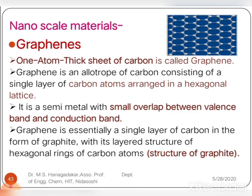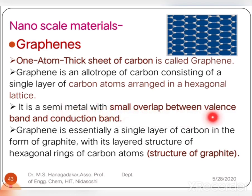The last nanoscale material is graphene. Graphene is one atom thick sheet of carbon. It is the allotropic form of carbon consisting of a single layer of carbon atoms arranged in a hexagonal lattice structure, meaning at each corner of a regular hexagon you find carbon atoms bonded with neighboring hexagonal six-membered rings.